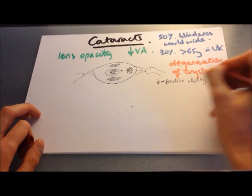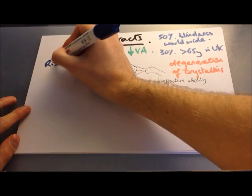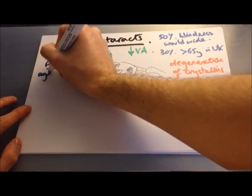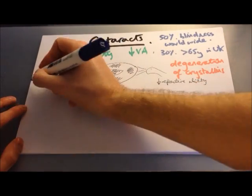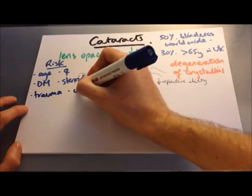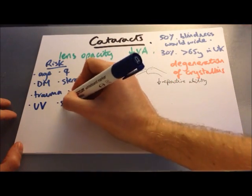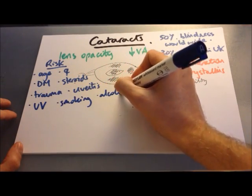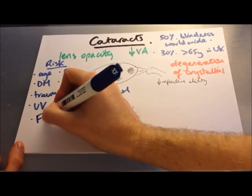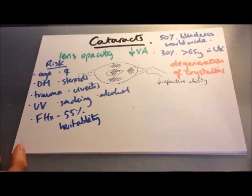The degeneration of these crystallins leads to the whitening opacity of the cataract and reduces the ability of the lens to refract light. Risk factors for cataracts include age, being female, diabetes (which increases risk of age-related cataracts and also causes a particular diabetic cataract), steroid use, trauma including surgery, uveitis, UV radiation exposure, smoking, alcohol, and family history — with a 55% heritability in first-degree relatives.